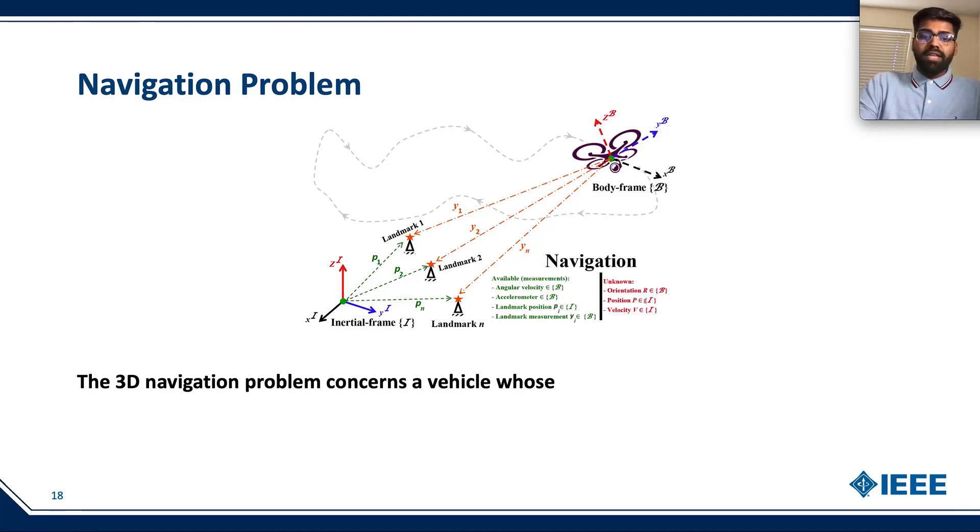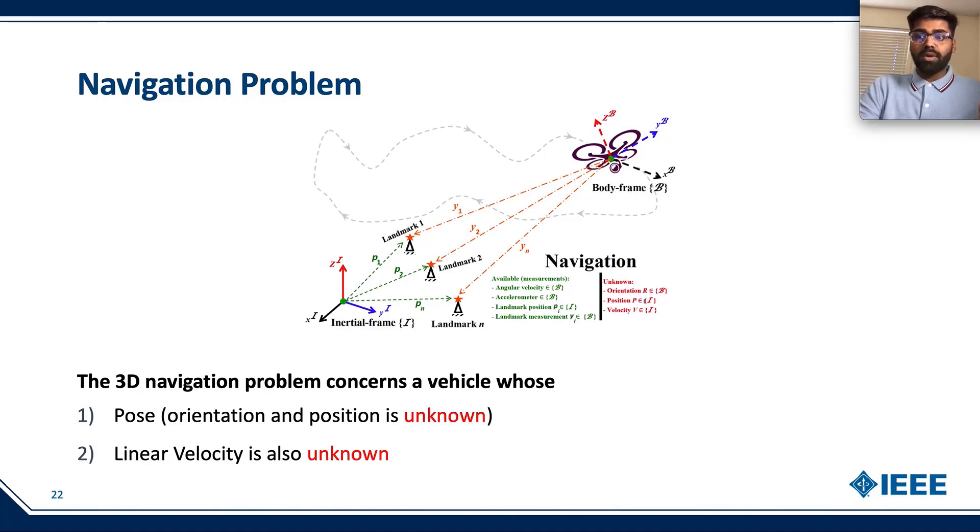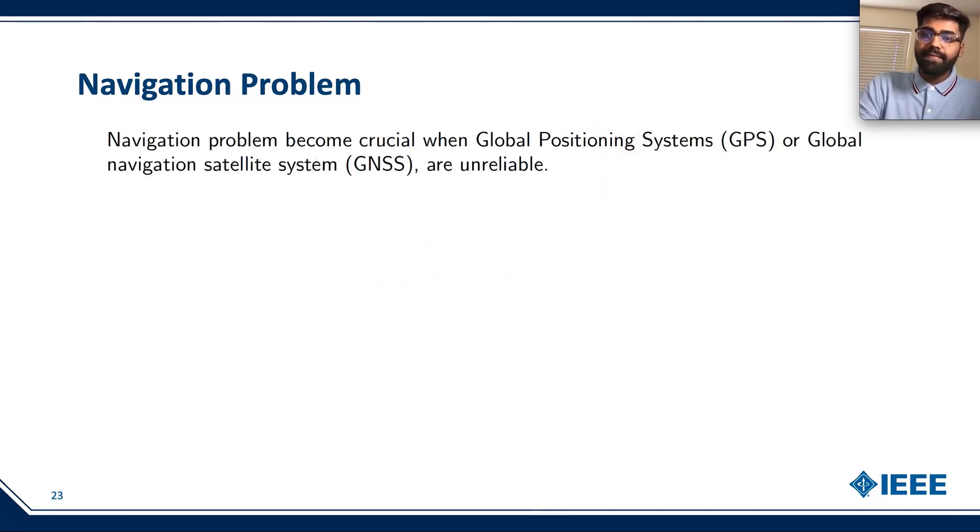The 3D navigation problem concerns a vehicle whose pose, that is orientation and position, is unknown. Along with that, its linear velocity is also unknown. The navigation problem becomes crucial when Global Positioning System or GPS, or Global Navigation Satellite System or GNSS, are unreliable.